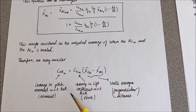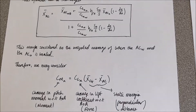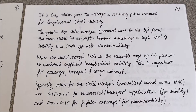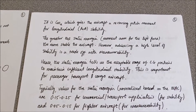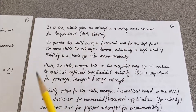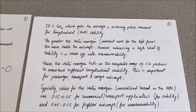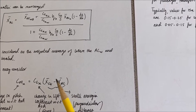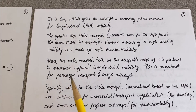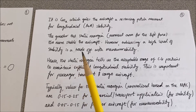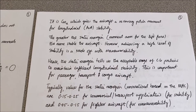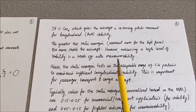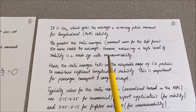We call this difference the static margin, and that's important for a number of different reasons. The Cm_alpha term is what gives the aircraft longitudinal stability — it's what gives the aircraft a restoring pitch moment to correct for turbulence, for example. The greater this difference between the centre of gravity position and the aerodynamic centre, the more stable the aircraft is, because we have a larger moment arm for the lift force. But that's not always a good thing, because an overstable aircraft is a compromise in manoeuvrability, so it becomes a trade-off between stability and manoeuvrability.